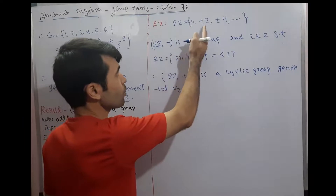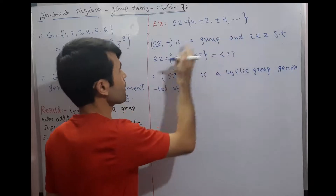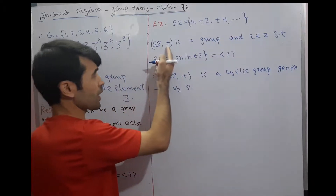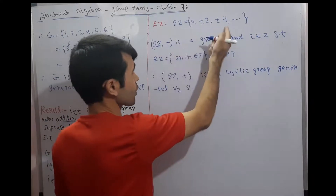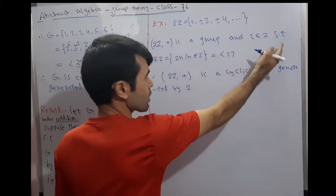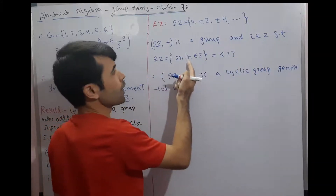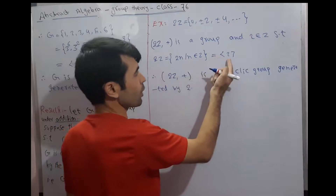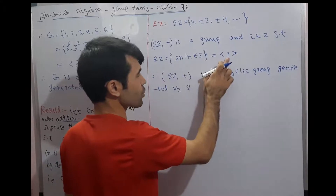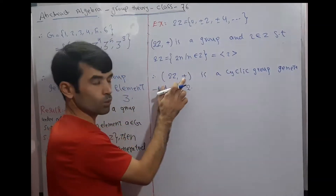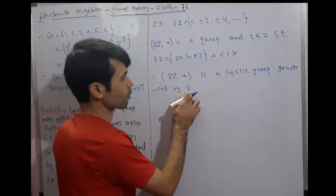Example: 2Z = {0, ±2, ±4, ...}. Here 2Z under addition is a group. We know 2Z is a group under addition. And 2 belongs to Z, so 2Z = {2n | n ∈ Z} = ⟨2⟩, the cyclic group generated by 2. Therefore 2Z under addition is a cyclic group generated by element 2.